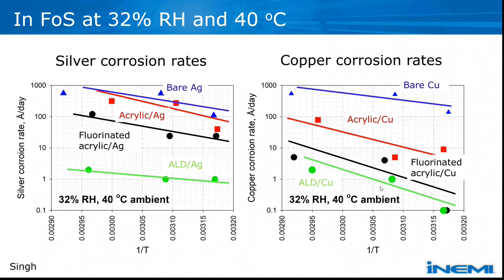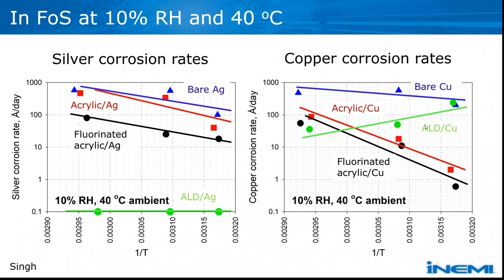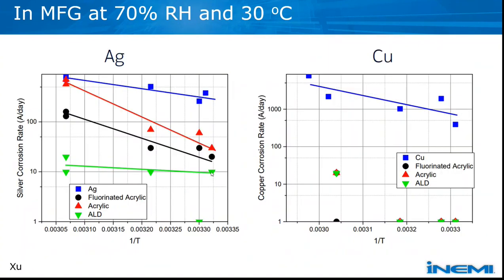This last one is at 10% RH in the flowers of sulfur chamber at 40°C. If you look at the chart on the right, the green plot for atomically deposited coating on copper has to be discounted because we had some issues with cleaning the substrate before applying the ALD coating. We will show with our iodine vapor test that when we corrected the problem, it did an excellent job of protecting the underlying metals. For acrylic and fluorinated acrylic, they're protecting copper better than silver.